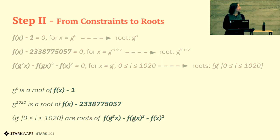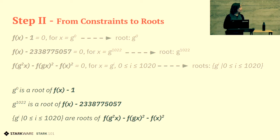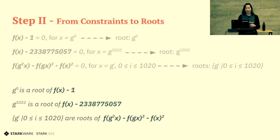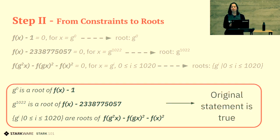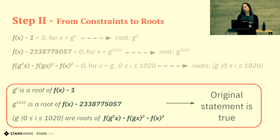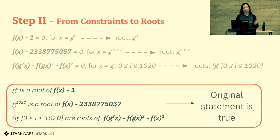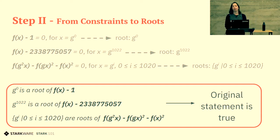If all these elements — g⁰, g^1022, and g^i for any relevant i — are roots of the polynomials on the right, it exactly means the original statement is true. So again, we can forget about the previous representation. It is sufficient to show that these elements are roots of the relevant polynomials. This is the next step of the reduction.